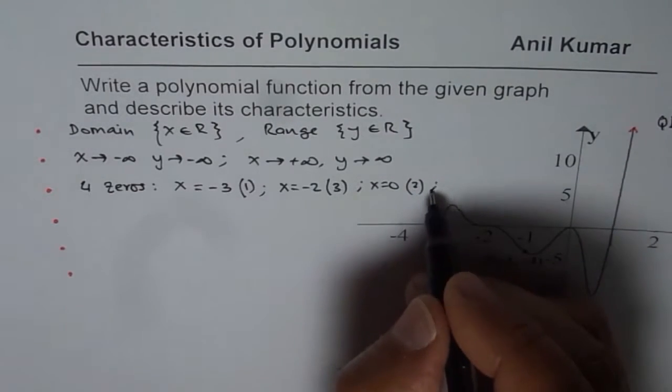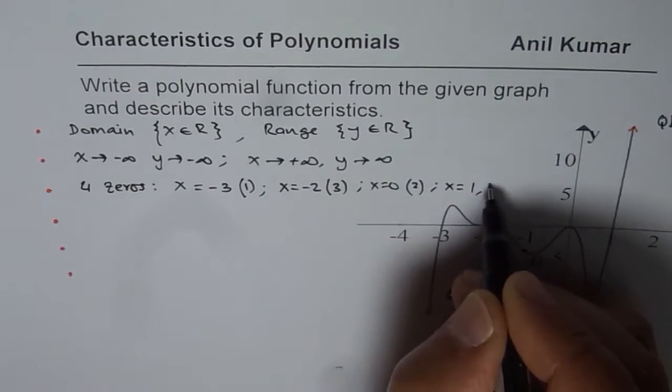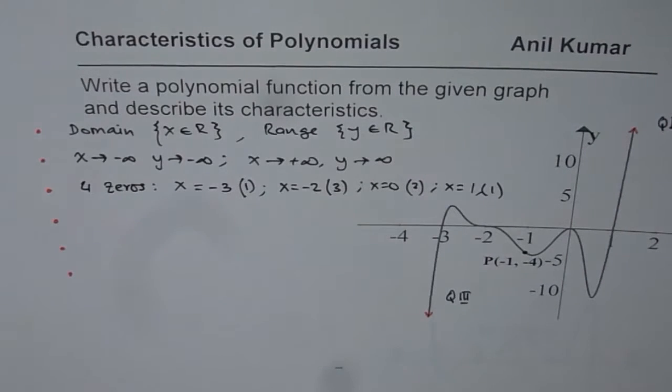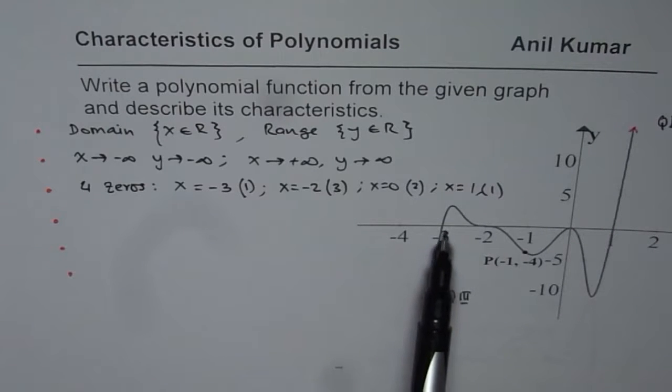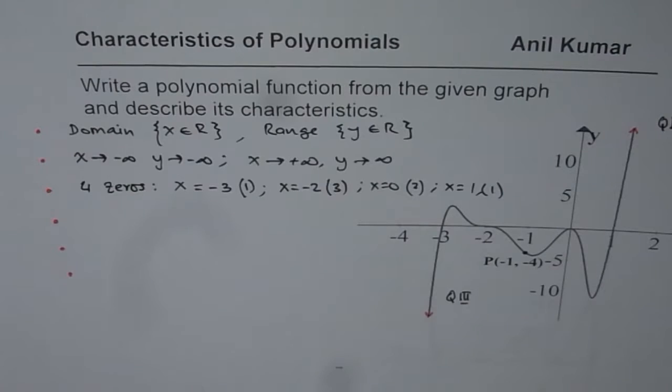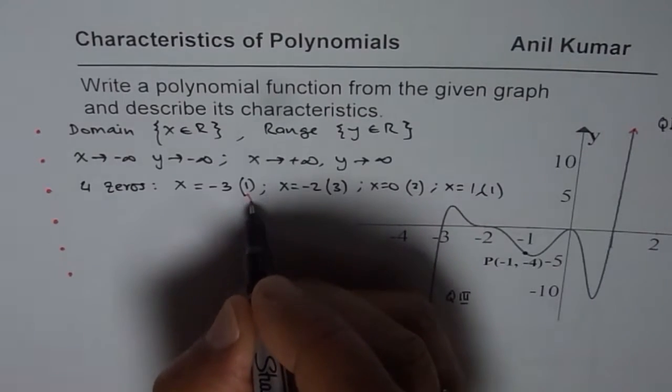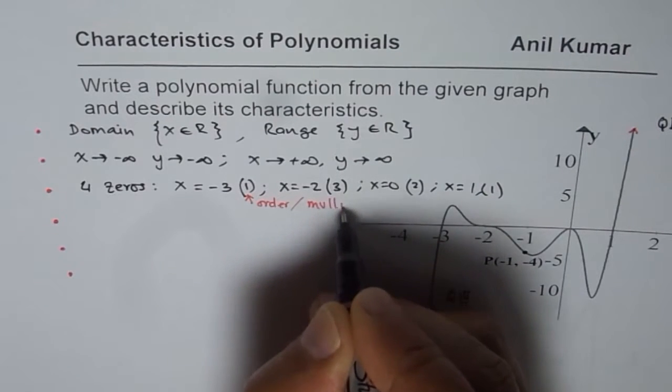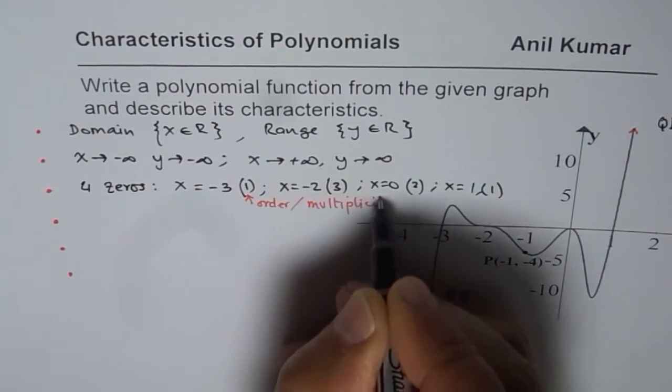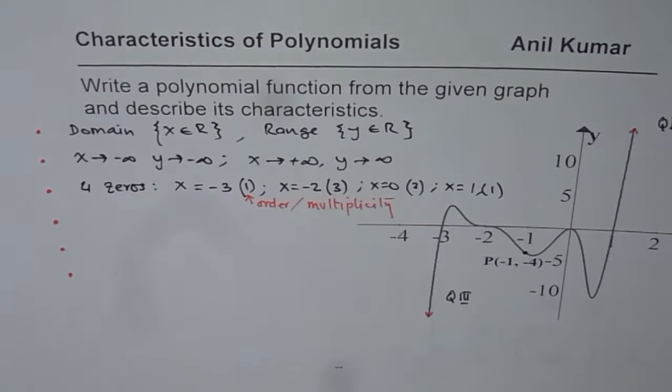And then we have 1 at x equals to 1, which is linear. So what we notice here is there are 1, 2, 3, 4 x intercepts. And when we talk about zeros, we are writing multiplicity or order here. Zeros will give you behavior at the x intercept for the given graph, and that will also help us to get the equation.